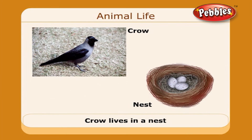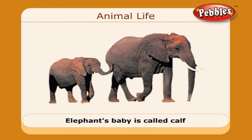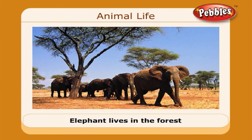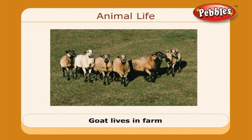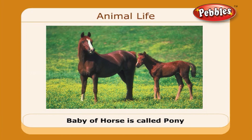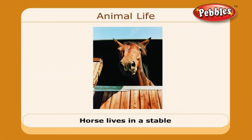The crow lives in a nest and it caws. An elephant's baby is called a calf; it lives in the forest, and the elephant trumpets. The young one of a goat is called a kid; it lives in the farm. A baby horse is called a pony; it lives in a stable and it neighs.